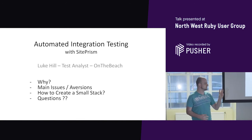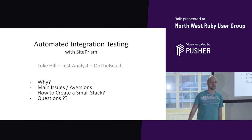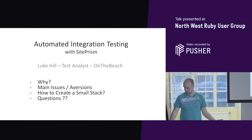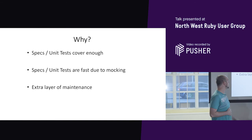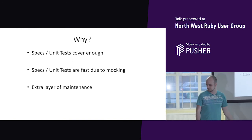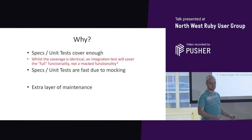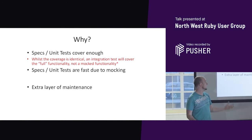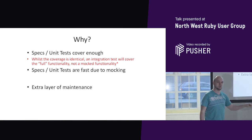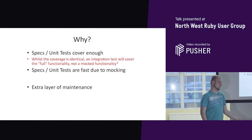Throughout this presentation, I want to talk about three different things: the main issues and aversions people might have to automated integration testing, and then a quick how-to for making a small stack. So thinking from the developer's perspective — why would I want to do this? Specs and unit tests cover enough; they're fast due to mocking; and there's an extra layer of maintenance. Let's look at the first one. The coverage will be identical if you do automated integration testing — you'll still cover the same code and test the same functionality. However, the integration test will cover the full functionality, not a mocked functionality. I'll reference that in the next point and show a couple of key examples from SitePRISM's own testing framework.